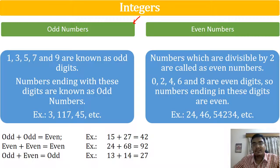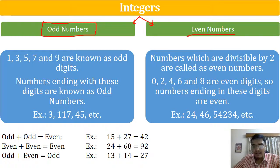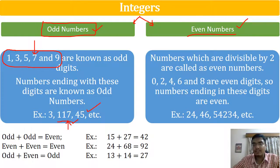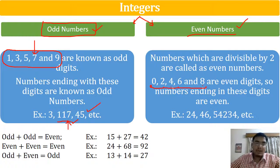Integers are divided into two groups: odd and even. The odd digits are 1, 3, 5, 7, and 9. If any number ends with these digits — like 117, whose ending digit is 7 — it is known as an odd number. Similarly, 45 would be an odd number. An even number is one which ends with 0, 2, 4, 6, or 8. Numbers ending with these are known as even numbers. We will define odd and even in a better form shortly, but this is the basic definition.